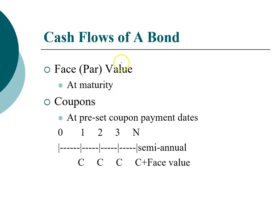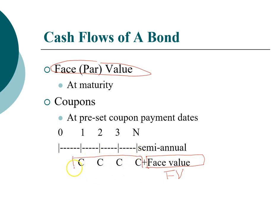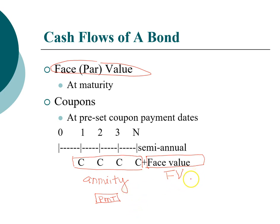When you invest in a bond there are two types of cash flow. The face value or par value is received on your maturity date — it is your future value, the value at the end of the investment. The coupon payment is a recurring payment of the same amount, so it is a type of annuity. If you're using your calculator you can enter that as the annuity payment. Once you know the timing and size of the cash flows, the only remaining thing to determine is the discount rate.